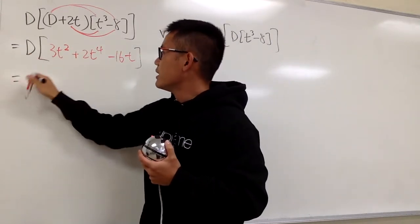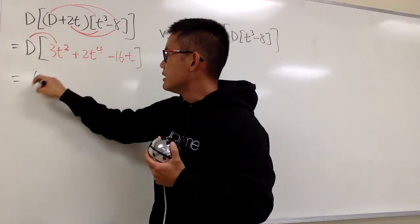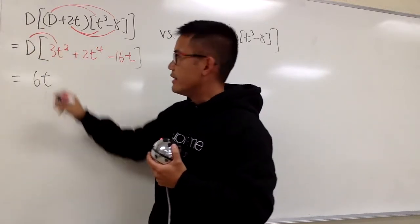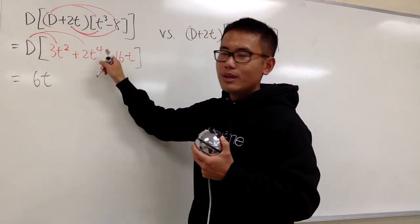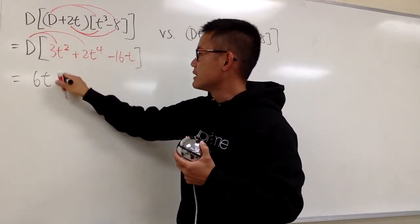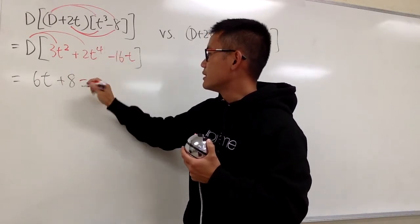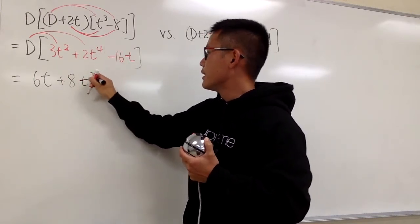Differentiating 3T squared, we get 6T to the first power. Then differentiating 2T to the fourth power, bring the 4 to the front, so we have plus 8T to the third power.